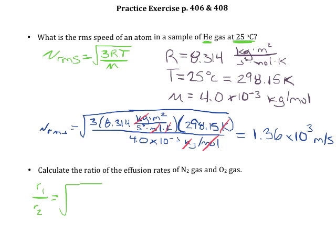So notice that I've got rate one over rate two is the square root of the mass of the second one over the mass of the first one. The reason for this is that the rate is inversely proportional to the mass. As the molecule gets larger, its rate is going to slow down.